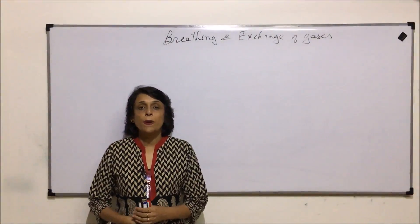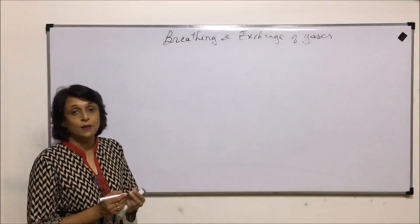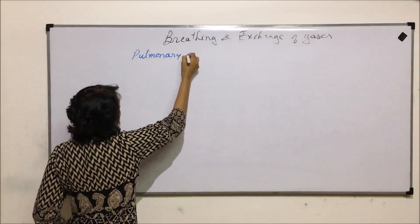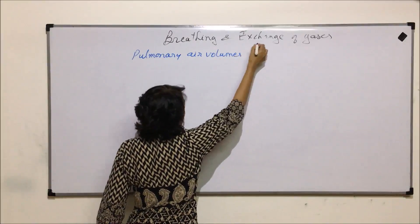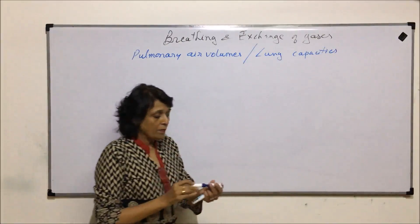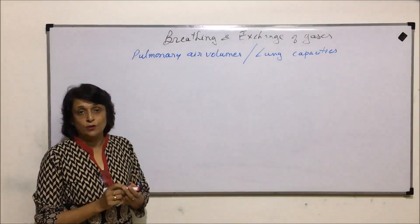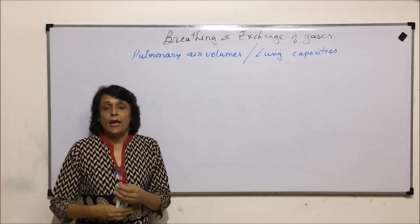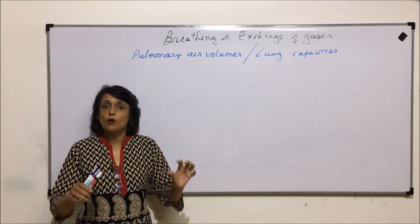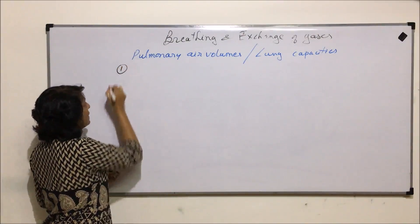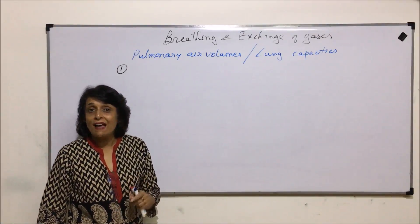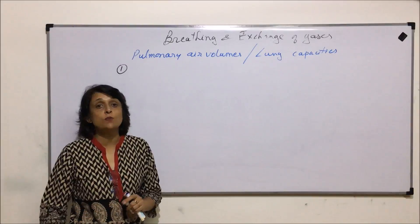We are now discussing the pulmonary air volumes or lung capacities. There are many terms used when talking about pulmonary air volumes, and for most of these terms there are abbreviations which are more commonly used than the full term. We will discuss all of them one by one, and towards the end we will understand the same volumes with the help of a graph obtained using a spirometer.